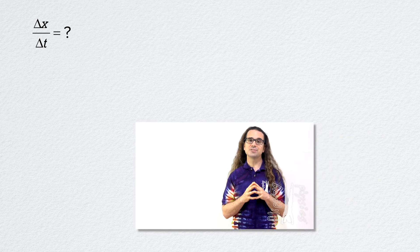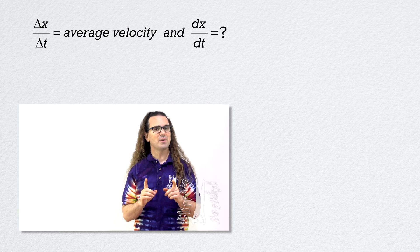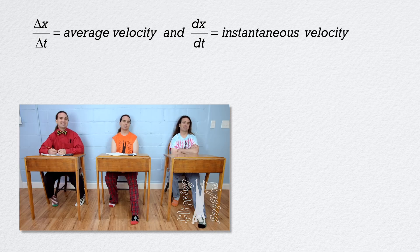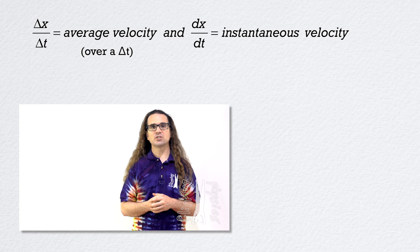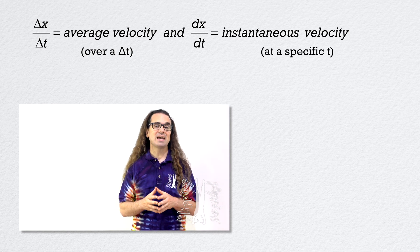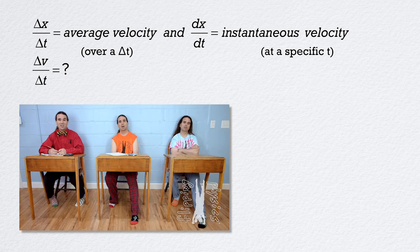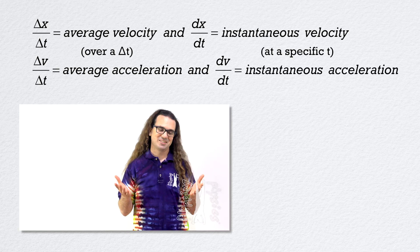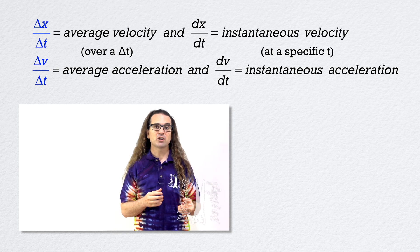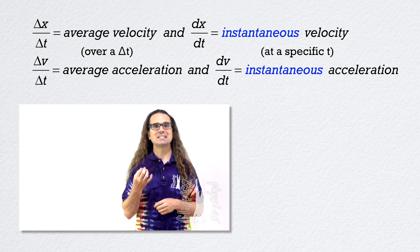Change in position over change in time equals average velocity — remember that is average velocity. And the derivative of position with respect to time equals instantaneous velocity. So, change in position over change in time equals average velocity over a time period, whereas the derivative of position with respect to time equals instantaneous velocity, or the velocity at a specific point in time. Change in velocity over change in time equals average acceleration. Therefore, the derivative of velocity with respect to time equals instantaneous acceleration. Please notice this trend: the change in a variable over change in time is the average value of that variable, and the derivative of a variable with respect to time is the instantaneous value of that variable. We are going to see this many times in this class.